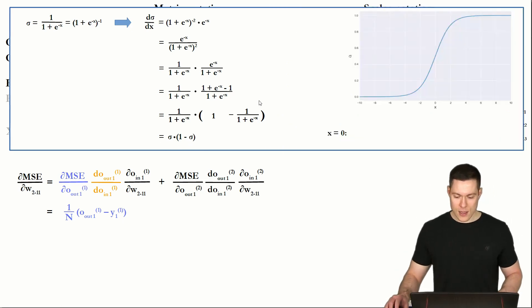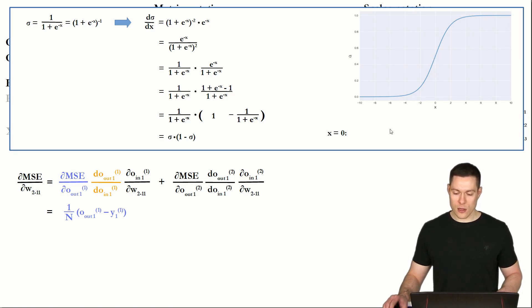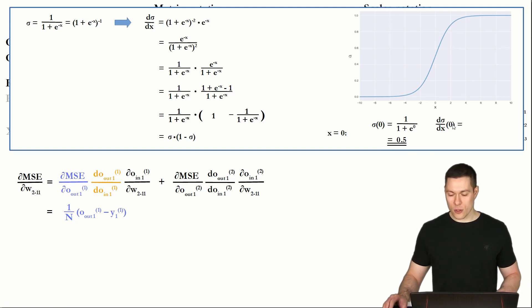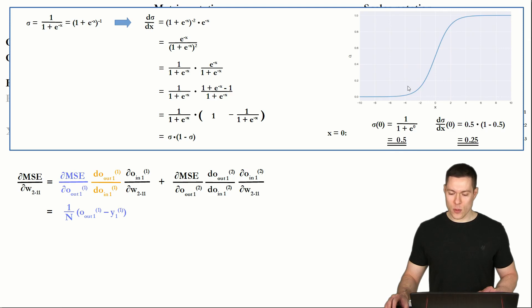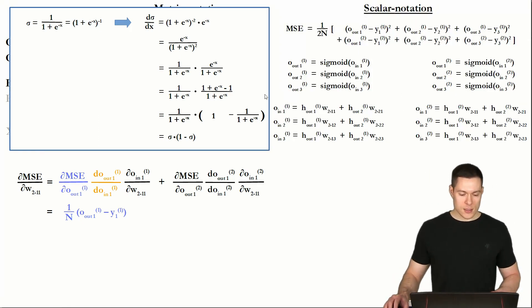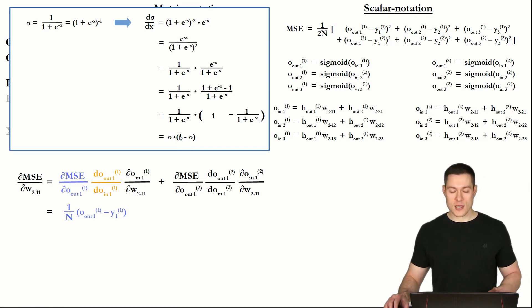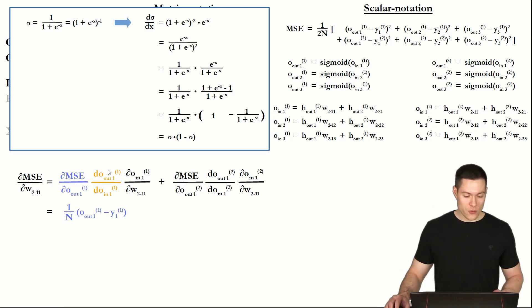So the derivative of the sigmoid function is actually just the output of the sigmoid function times 1 minus the output of the sigmoid function. For example, if x equals 0, we calculate the output at that point, which is 0.5. Then the derivative or slope at that point is simply 0.5 times 1 minus 0.5, which equals 0.25. This is actually the largest slope of this function — at all other points the slope is smaller. So the derivative of O_out 1 is simply O_out 1 times 1 minus O_out 1.